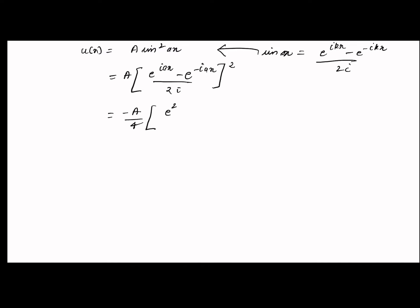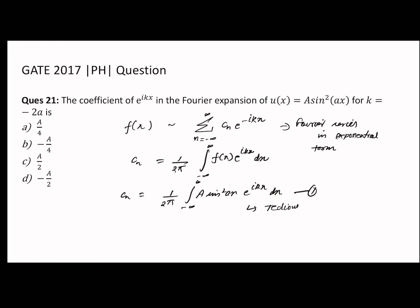Both will give the same value. If you expand and solve this u² term in the bracket, u(x) = -A/4[e^(2iax) + e^(-2iax) - 2]. In the question they asked for the value k = -2a.